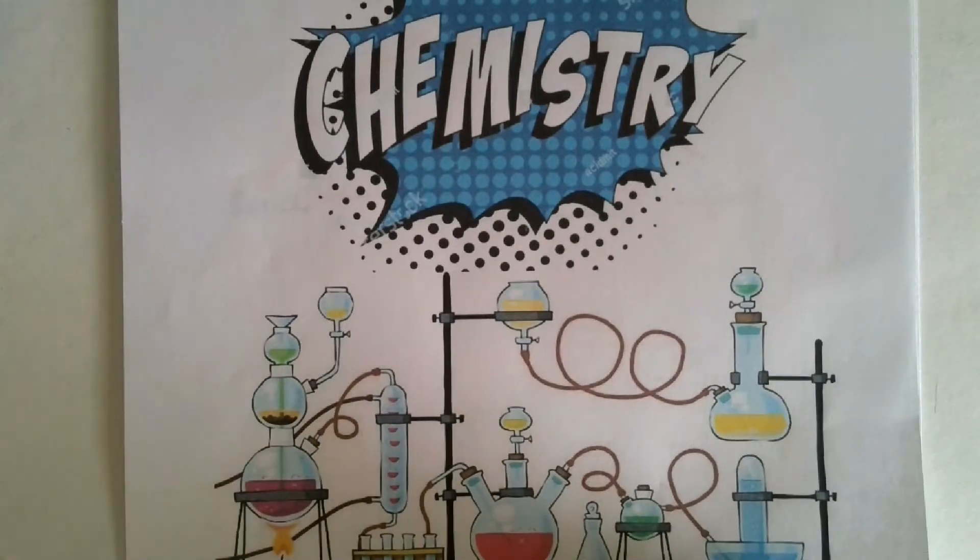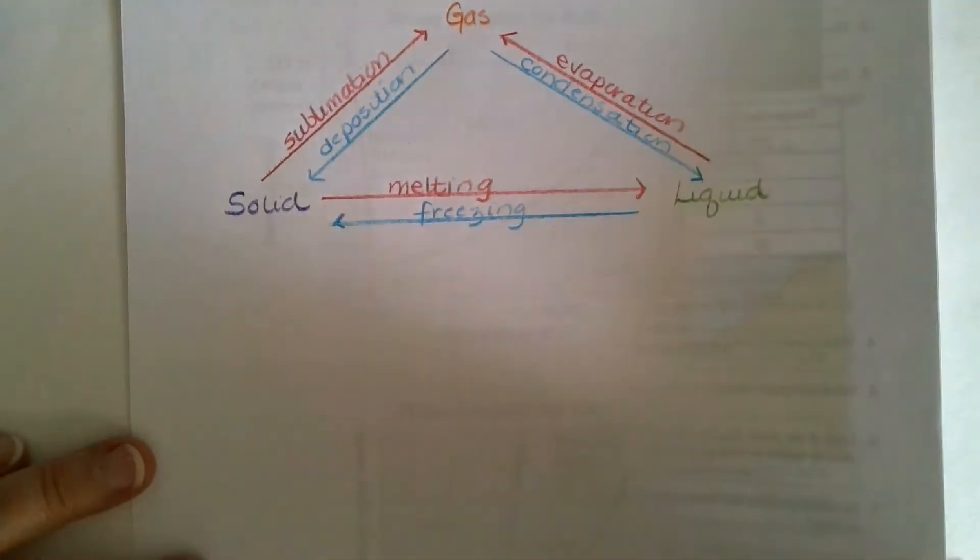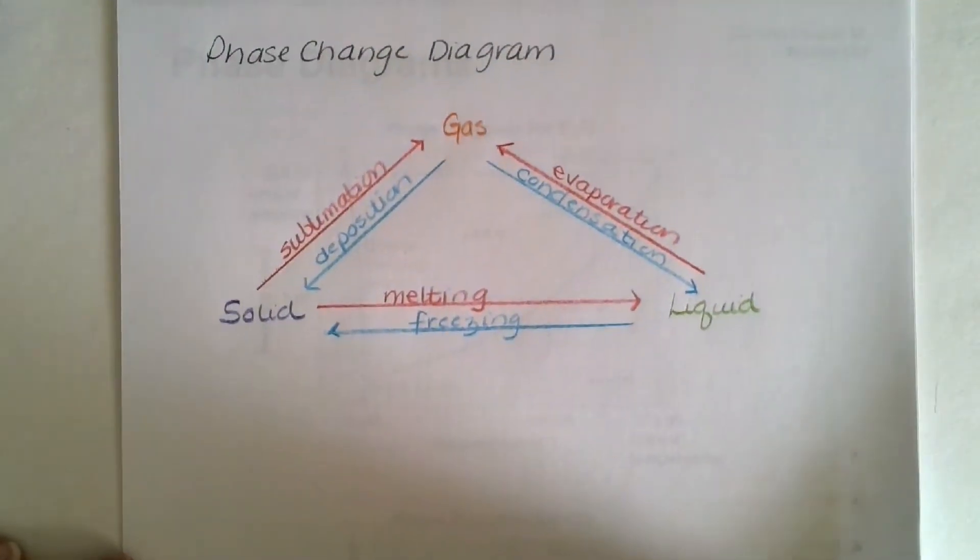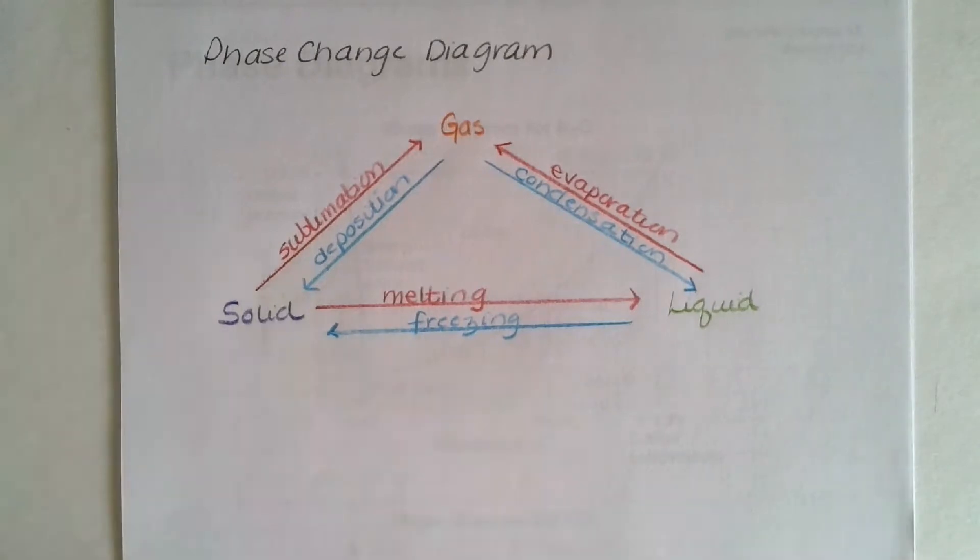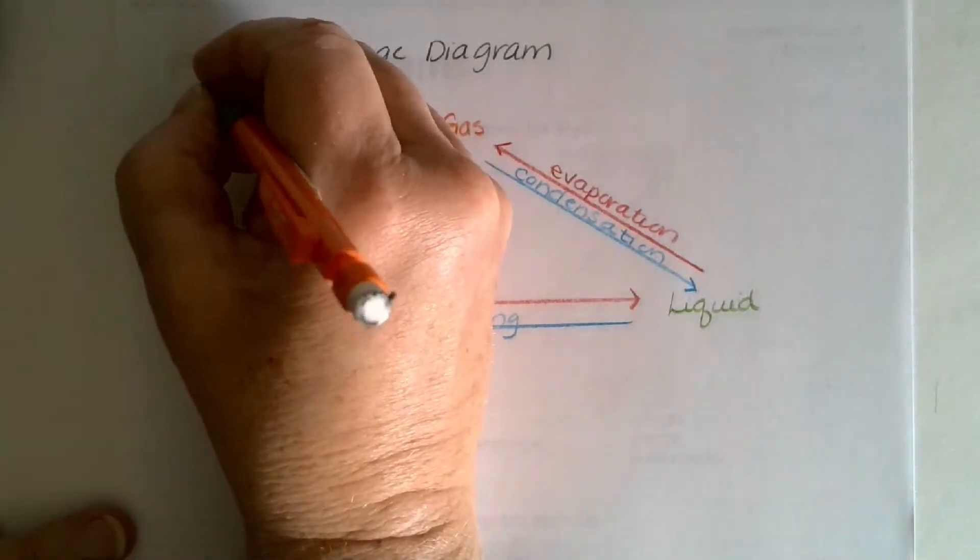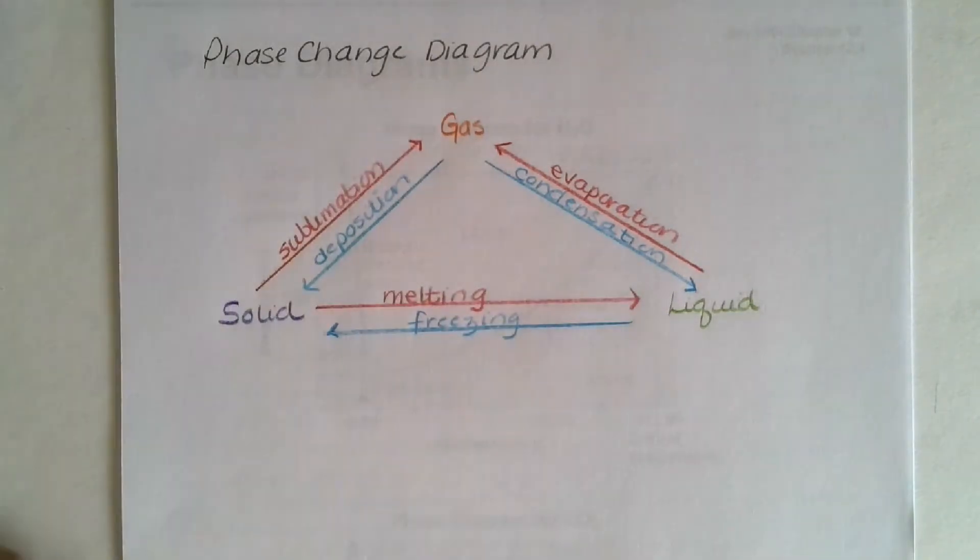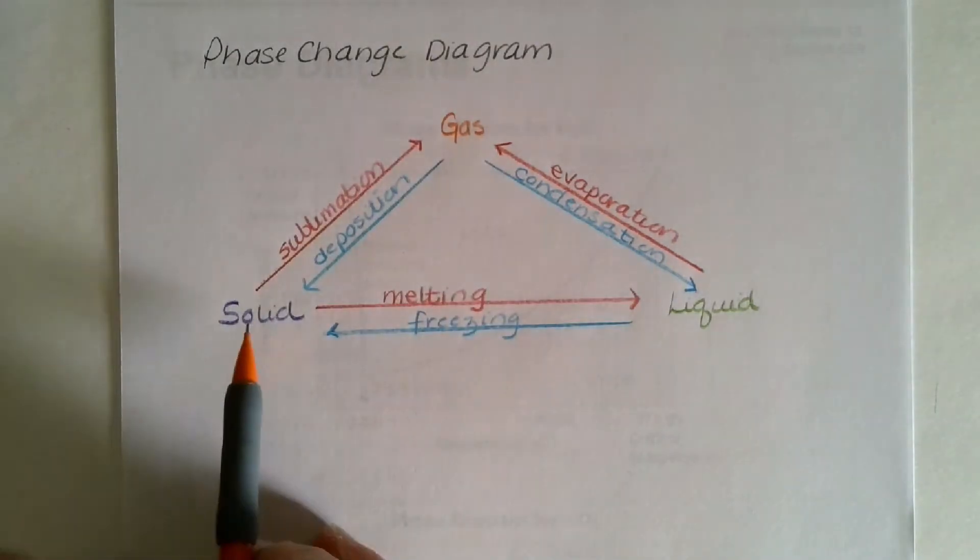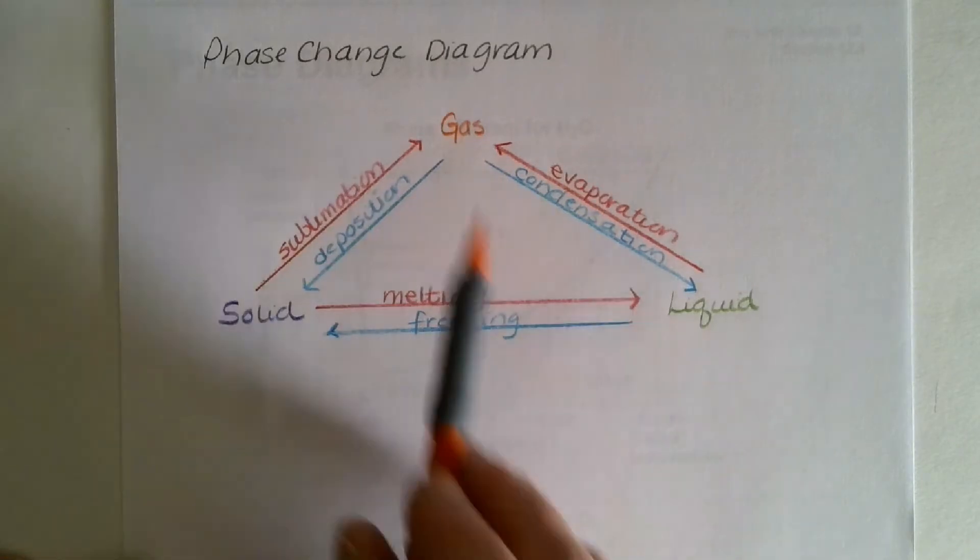When we discuss the states of matter, we have to look at how they change from one to the other. So here's a phase change diagram showing how they're changing from one to the other. And if you want to stop the video to copy this down, I would suggest that. So if you look at this, we have a solid, a liquid, and a gas.